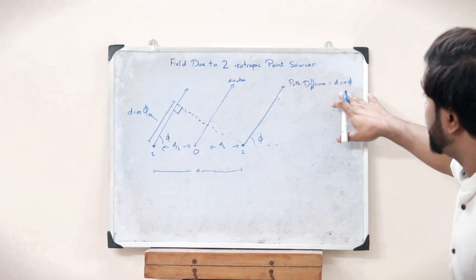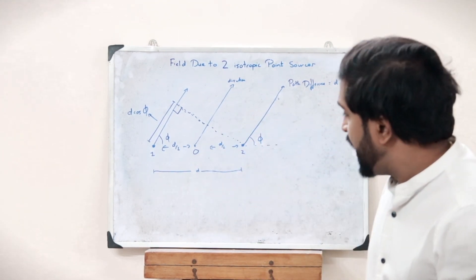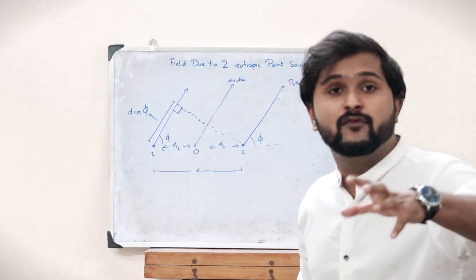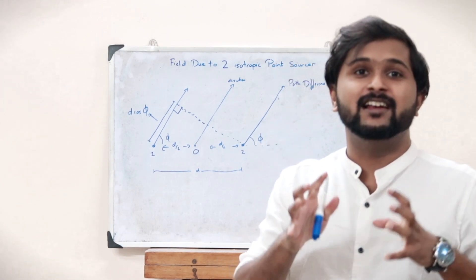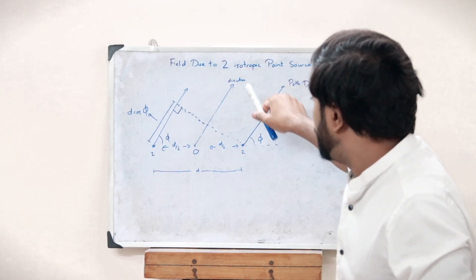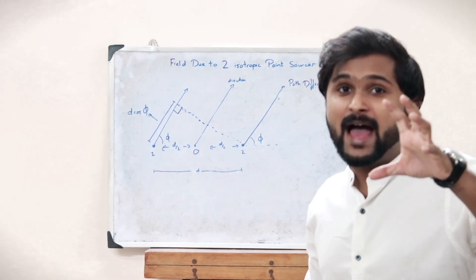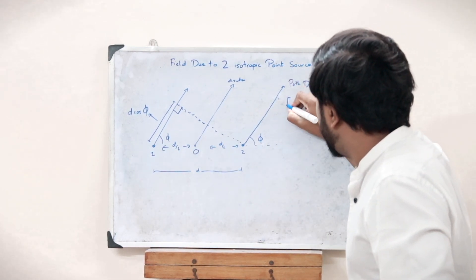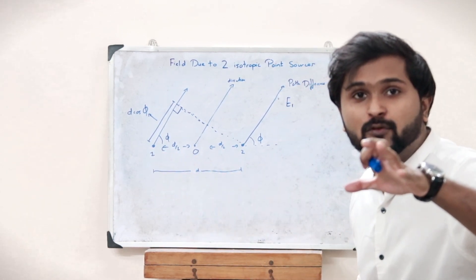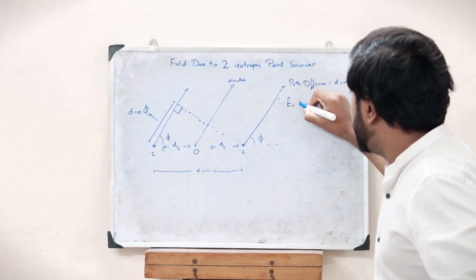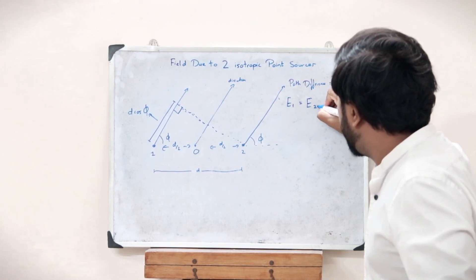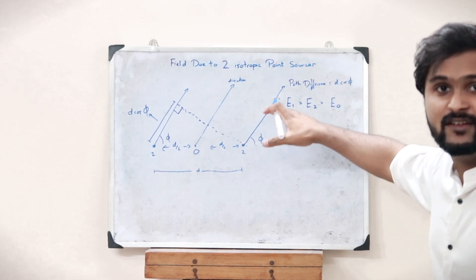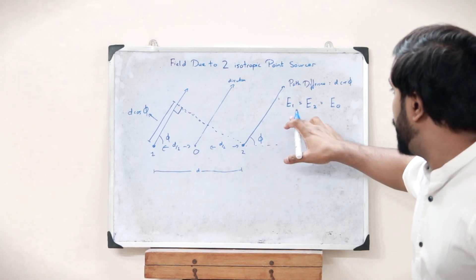Since the amount of current flowing through each source is equal, the magnitude of the electric field generated by point source 1 and point source 2 will be equal. That is, E1 = E2, and we assume this common magnitude value to be E0.